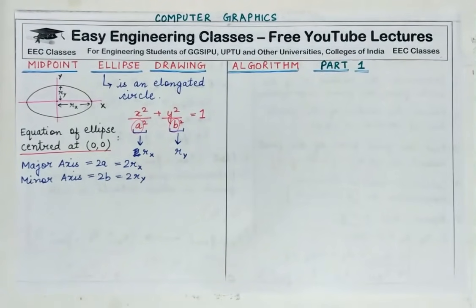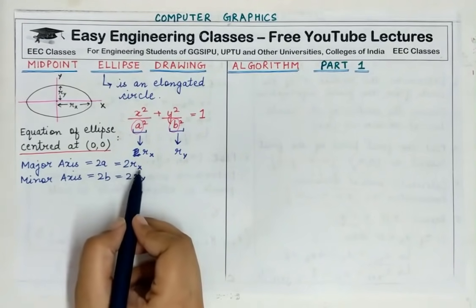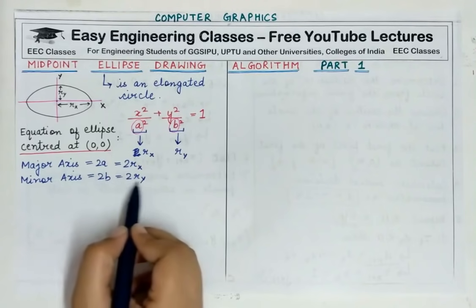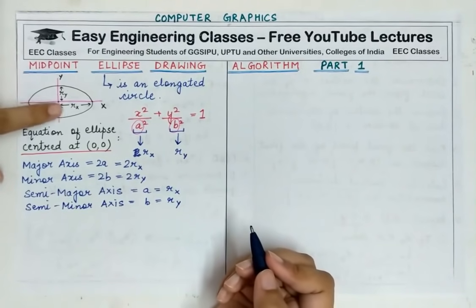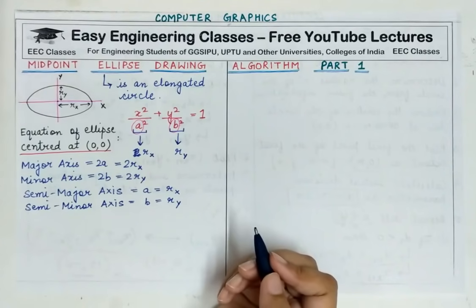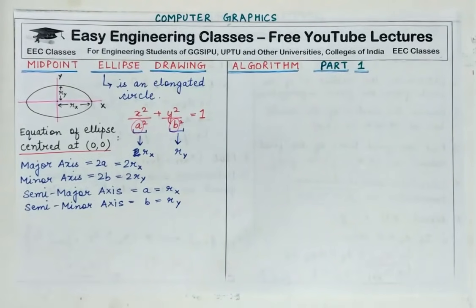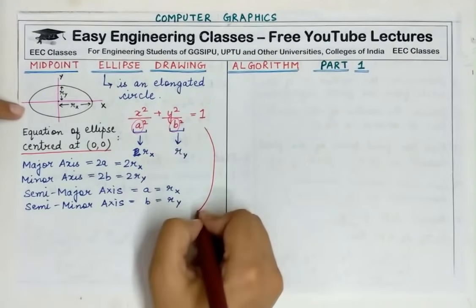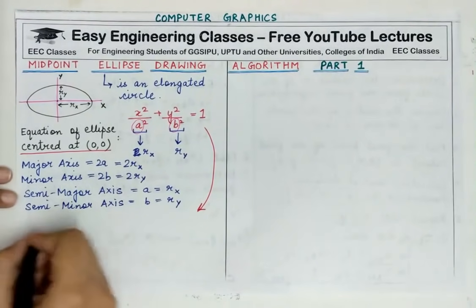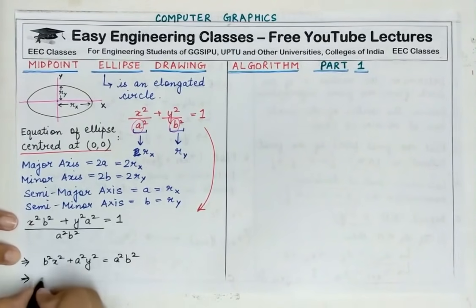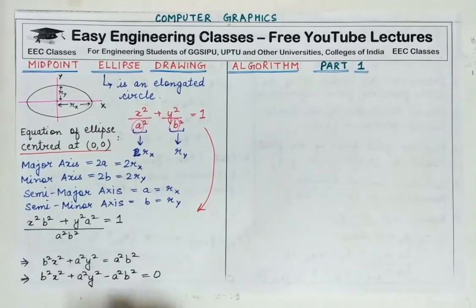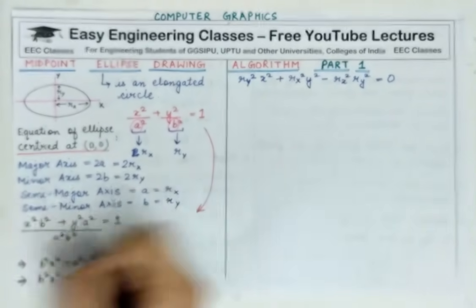So correspondingly, we have semi-major axis and semi-minor axis. The semi-major axis is equal to a, or equal to Rx. Similarly, the semi-minor axis is equal to b, or equal to Ry. So here, where you see Rx you can write a, and where you see Ry you can write b. I am writing the ellipse equation in a different way — using the denominators, cross-multiplying, taking all terms to one side. This gives us the final ellipse equation which we will use throughout this algorithm. This is an important equation.